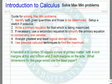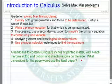Let's look at a handbill to contain 50 square inches of printed matter with 4-inch margins at the top and bottom and 2-inch margins on the side. What dimensions for the page would use the least amount of paper?